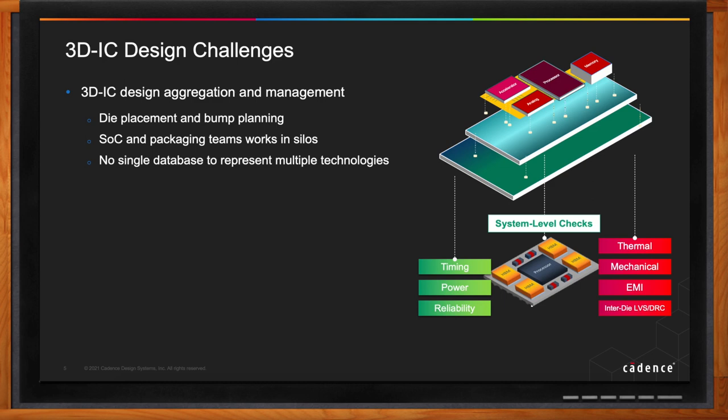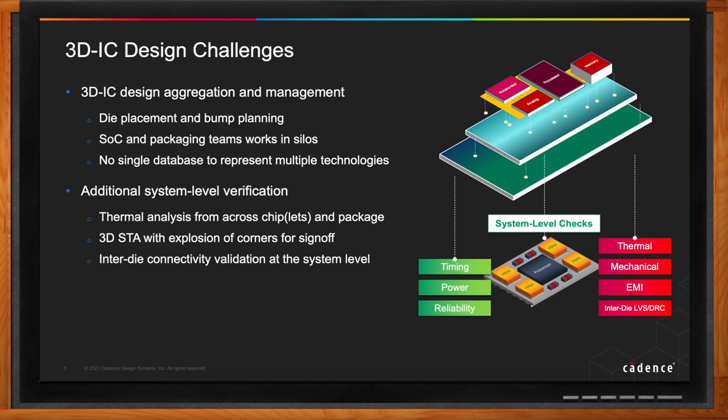These different chiplets can be in different technology nodes, so there has to be a way from an EDA point of view to represent all of this in a database where multiple technologies can be looked at at the same time. There are definitely additional checks that need to be done — things like thermal dissipation, mechanical warpage, EMI, and inter-die connectivity through LVS or DRC checking.